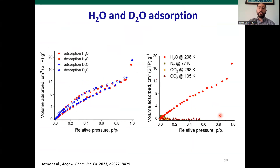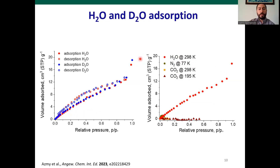In order to validate the porous nature of the material, we performed gas and vapor sorption studies, since this is the only way to demonstrate that a porous material is indeed porous. Carbon dioxide and nitrogen sorption studies revealed no gas uptake. Therefore, we performed vapor sorption studies with water at room temperature, and we observed a fully reversible sorption isotherm for both water and deuterium oxide. This means our material is ultra-microporous — the kinetic diameter of water is much smaller than that of nitrogen and carbon dioxide — and the material practically acts as a molecular sieve.